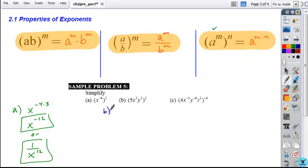For problem B, here it's a combination of these, both the power of a product rule and power of a power rule. Here this power of 2 is going to apply to every single factor in the base.